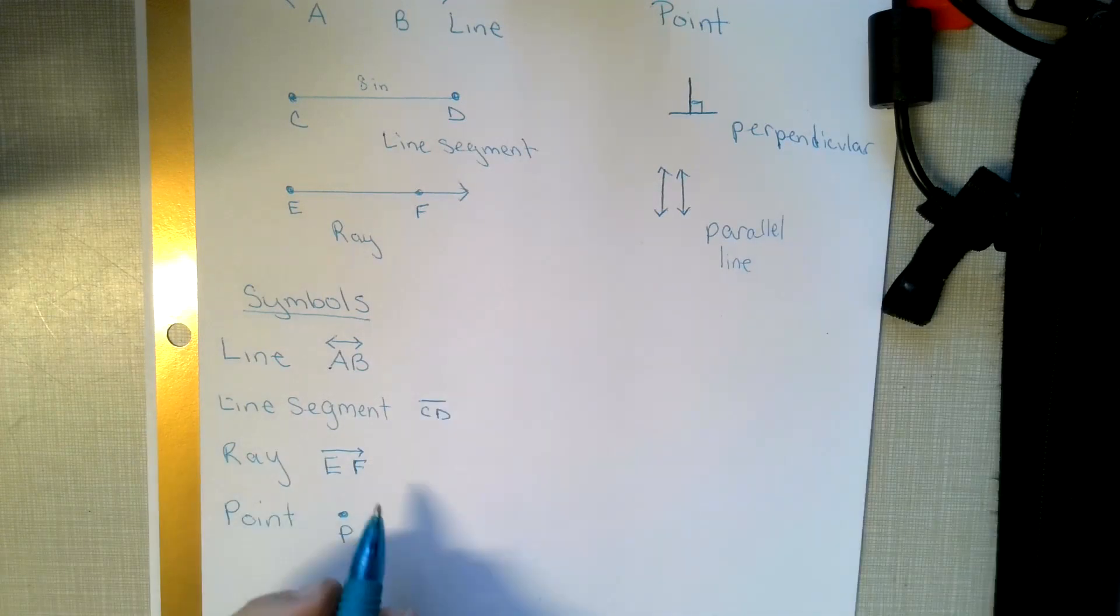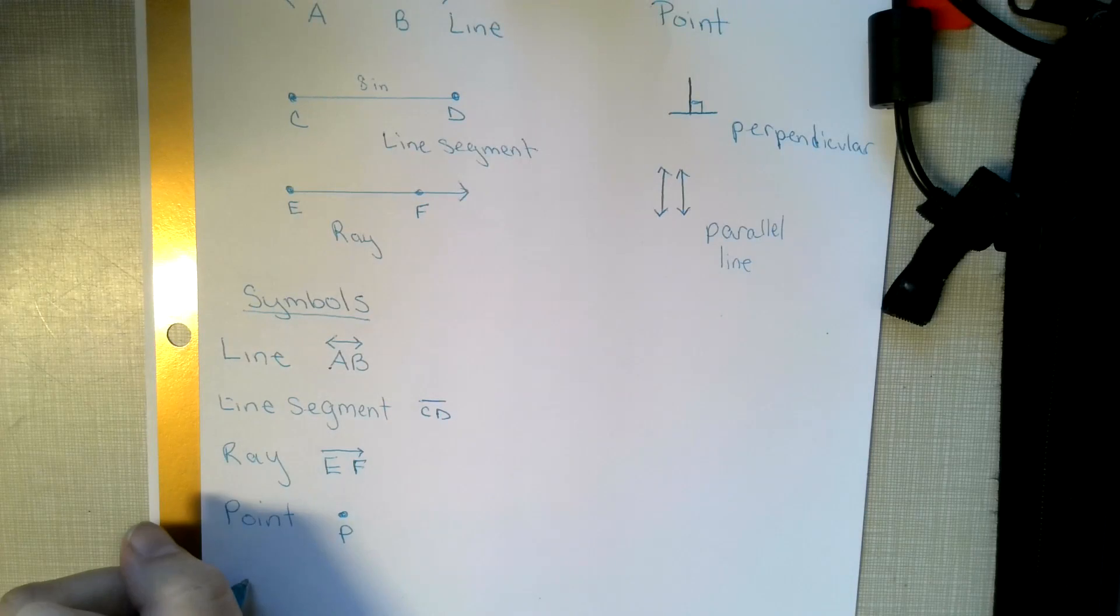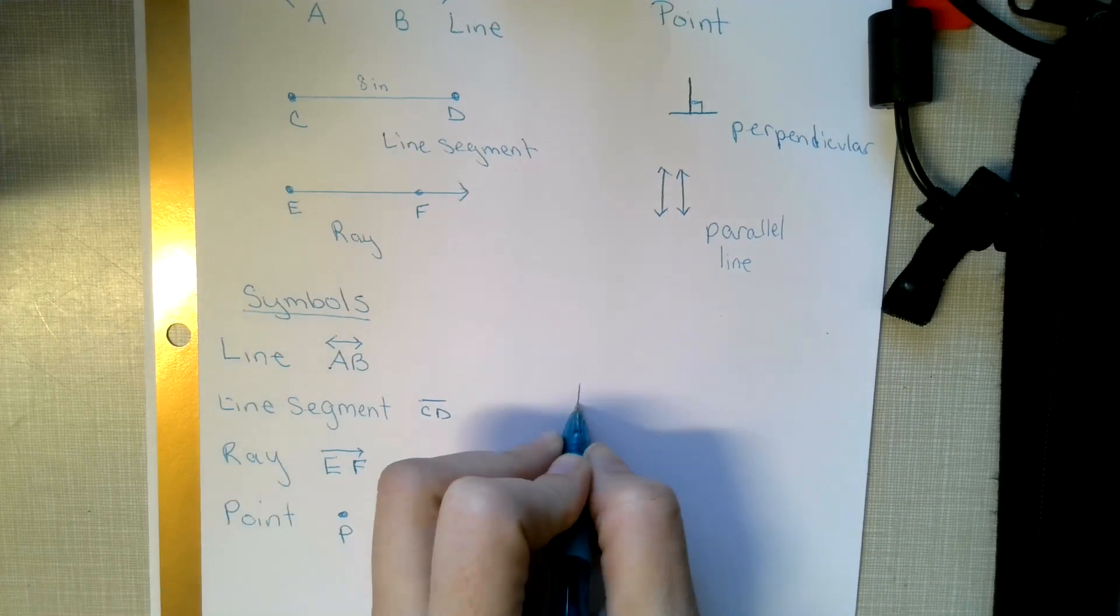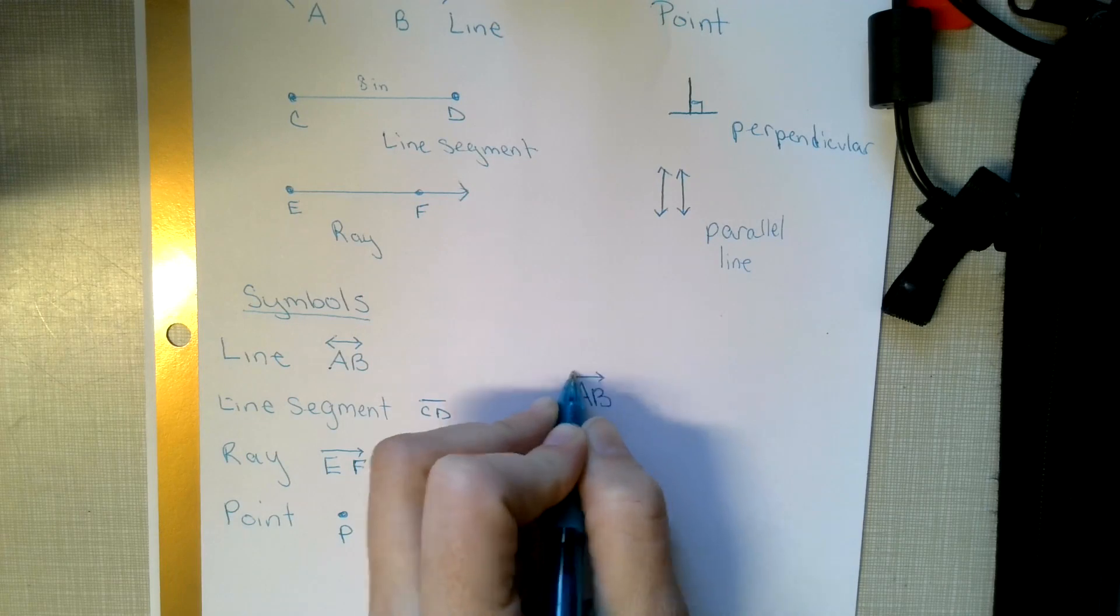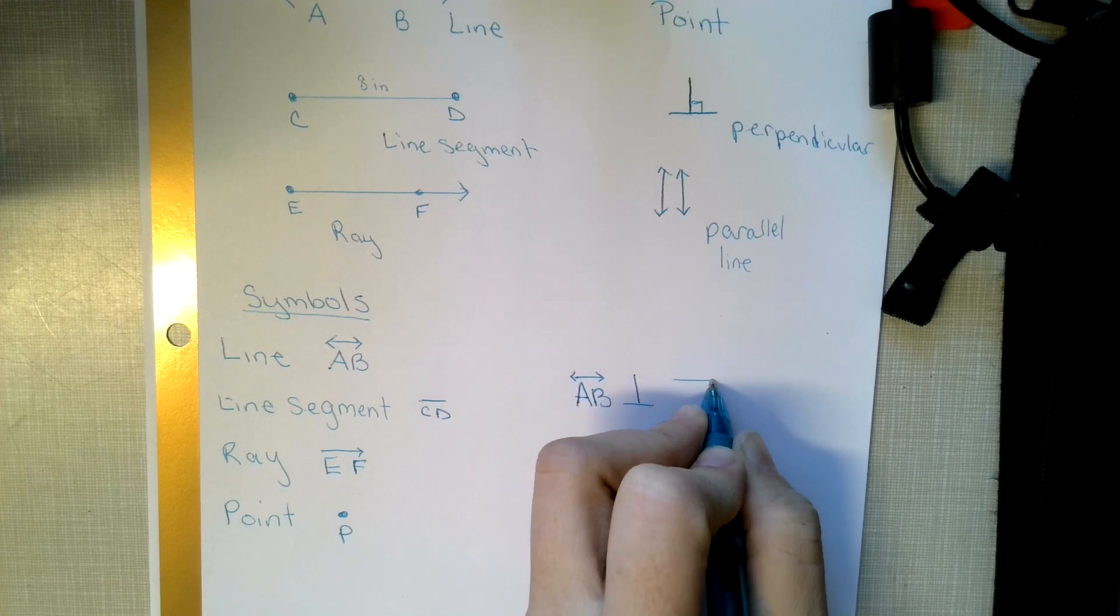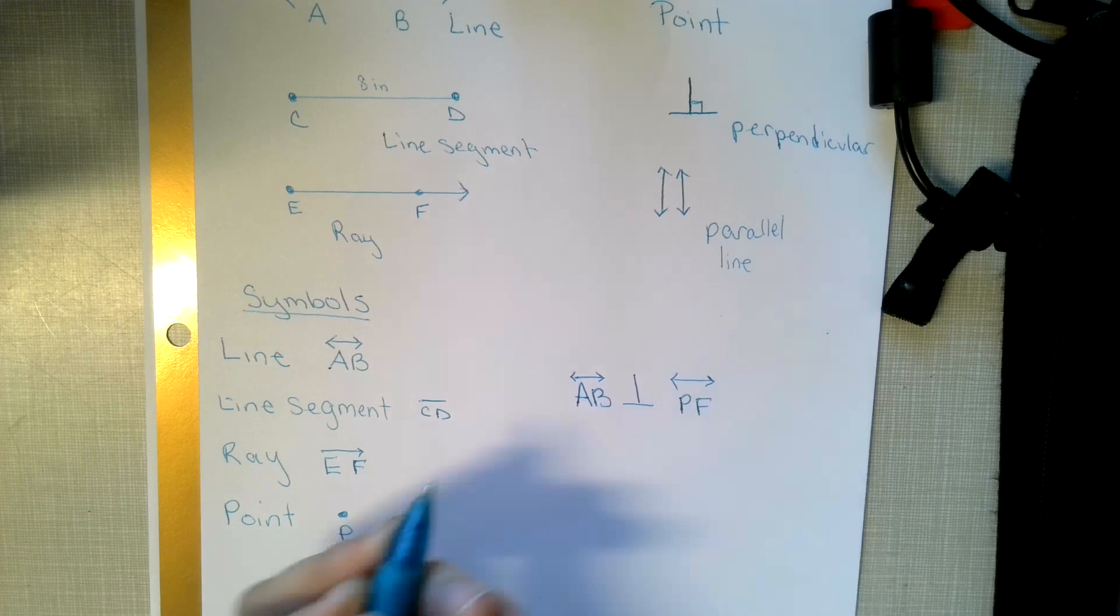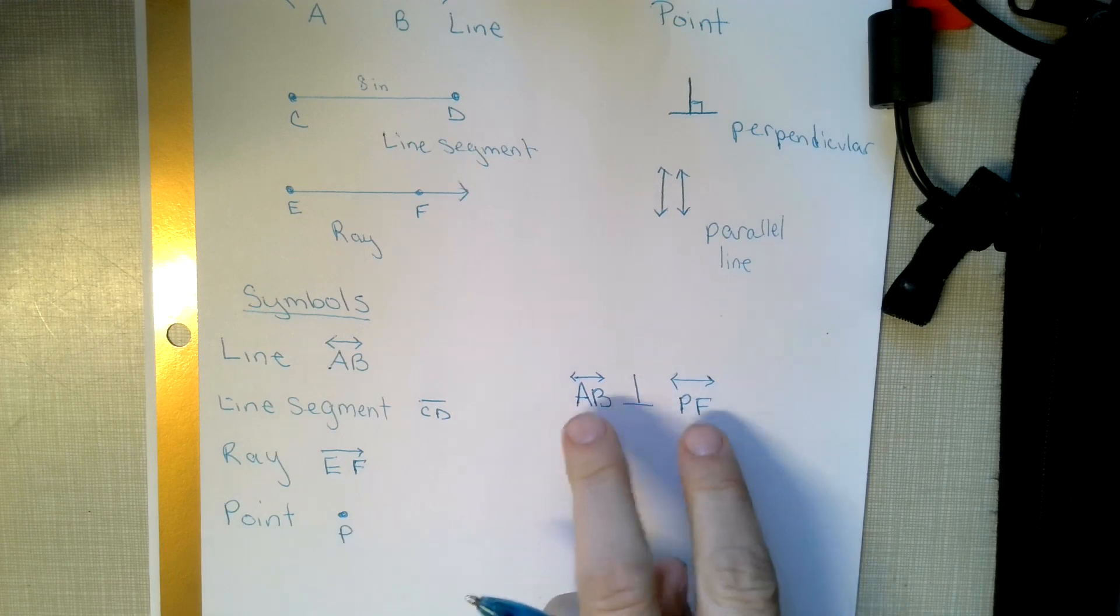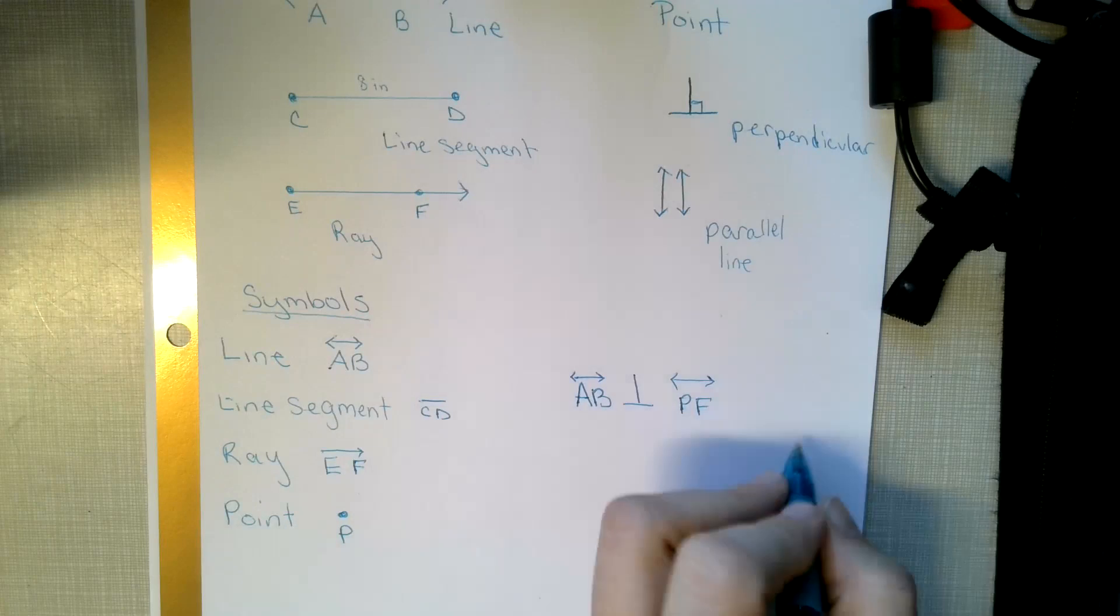Now perpendicular. If we were saying some line is perpendicular to another line, we could say, like I'm just making something up, I could say line AB is perpendicular to line PF. If I just made something up, that's what it would look like if you're saying one line is perpendicular to the other.